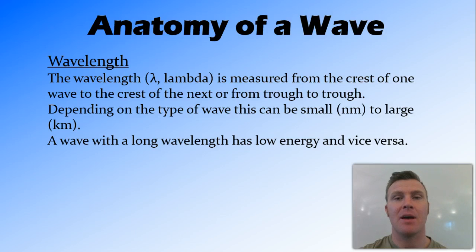The wavelength can be very, very small. It could be in the nanometers for visible light, for example, or it could be very, very large, with some radio waves having a wavelength up in the kilometers. Also, a wave that has a short wavelength has high energy, and a wave that has a long wavelength has low energy. So short, high, long, low.